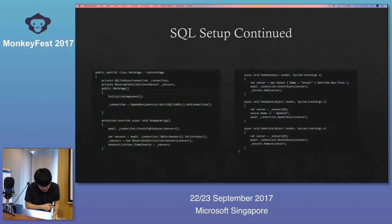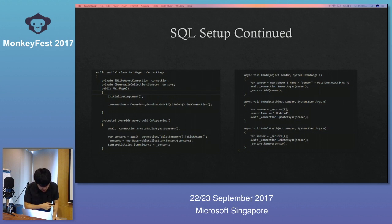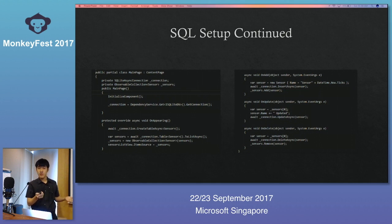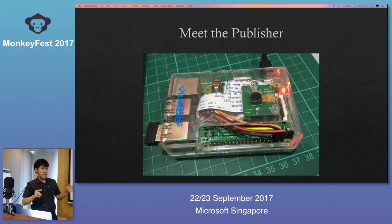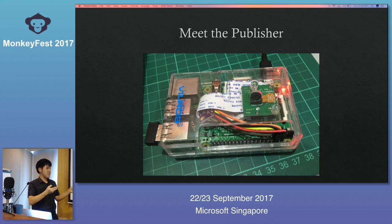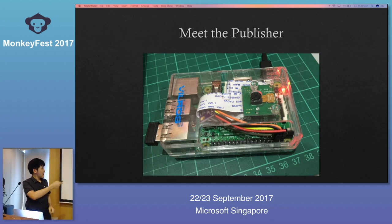We can declare a new sensor variable, await a new connection, and loop the data retrieval continuously to keep it going. One note before I continue: I'm not going to go back and forth to Visual Studio during this presentation. I'll just be showing code snippets I believe are crucial to understanding the basics of IoT — specifically the connection methods needed for IoT integrations.